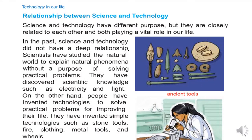Relationship between science and technology: Science and technology have different purposes but they are closely related to each other, and both play a vital role in our life. In the past, science and technology did not have a deep relationship. Scientists studied the natural world to explain natural phenomena. They discovered scientific knowledge such as electricity and light. On the other hand, people invented technologies to solve practical problems and improve their life, such as stone tools, fire, clothing, metal tools, and wheels.